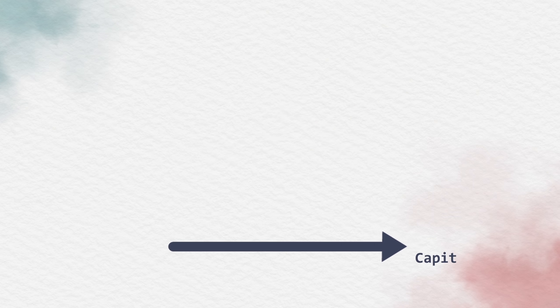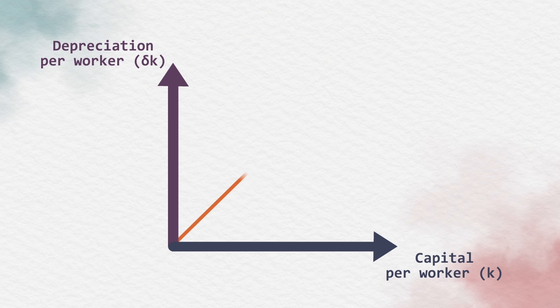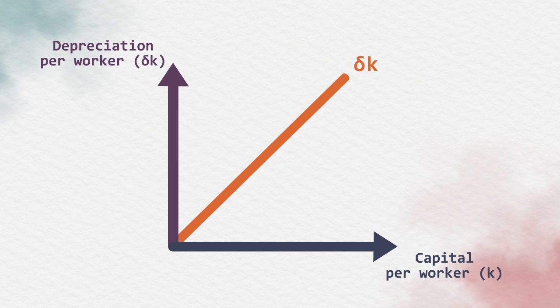Let's put the capital per worker on the horizontal axis and the depreciation per worker on the vertical axis. Then the relation will move like this: the depreciation will increase at a constant rate as capital increases.